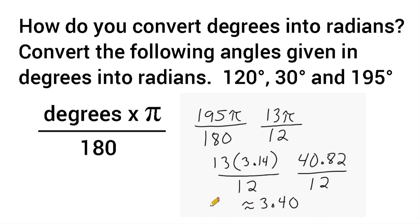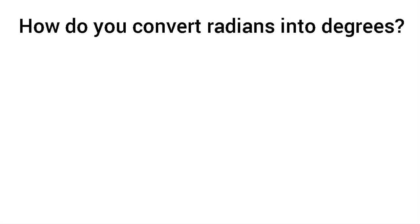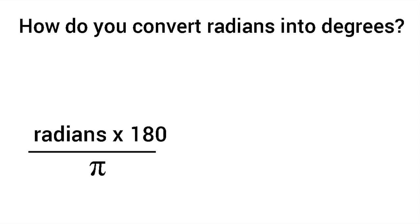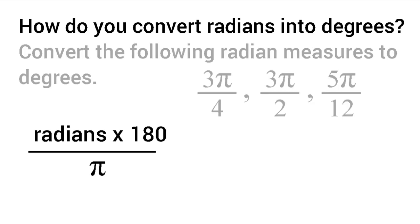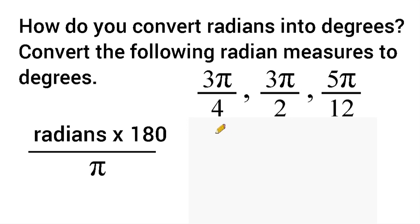Now let's do the reverse — take something given in radians and convert it back into degrees. To convert radians into degrees, multiply the number of radians by 180 and divide by pi. For the first example, 3 pi over 4, we write it as 3 over 4 times pi over 1, then multiply by 180.